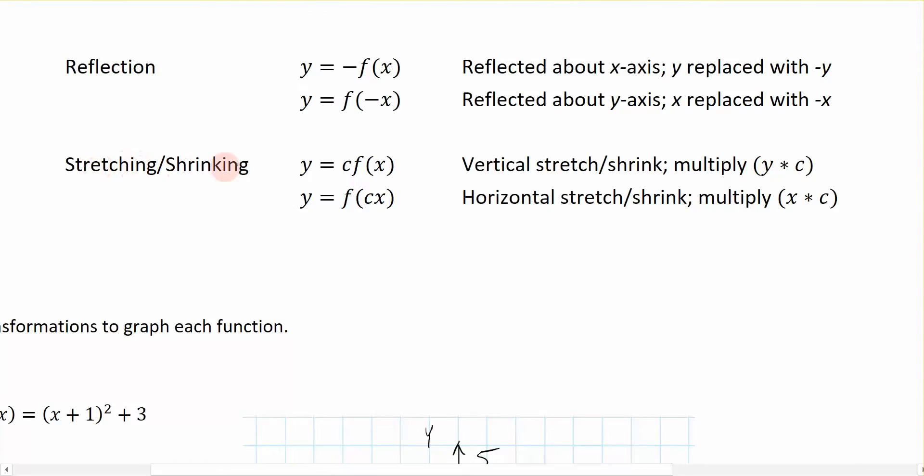And the other type of translation or transformation we can have is kind of stretching and shrinking. So this is where we are basically scaling or multiplying my function by some value. Now, if I multiply the function, so if my multiplier, c in this case, is multiplying to the outside of my function, then the effect is to change the, it's multiplying my y-coordinate. And we have, in other words, we have a vertical stretch or a shrink.